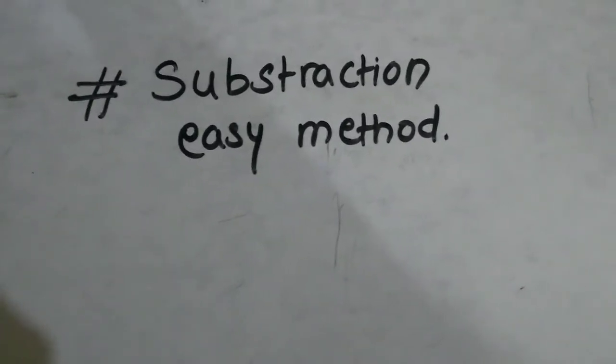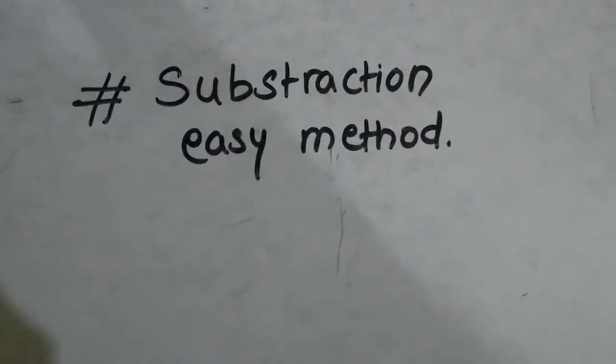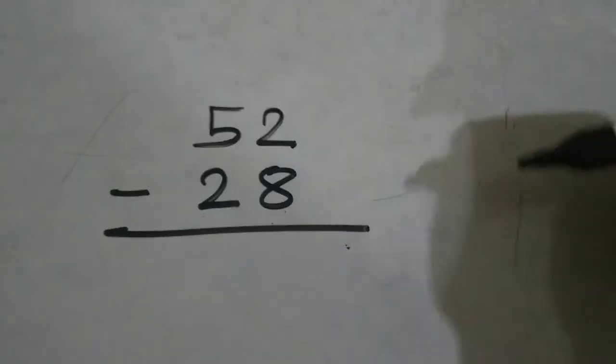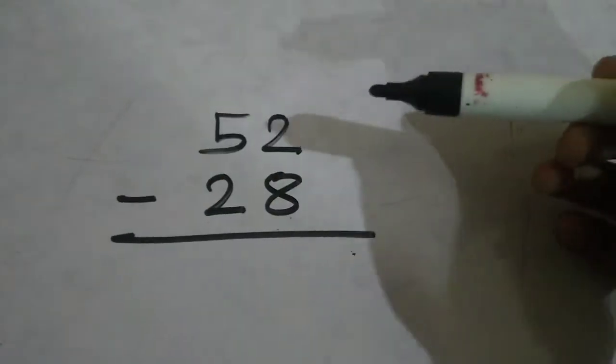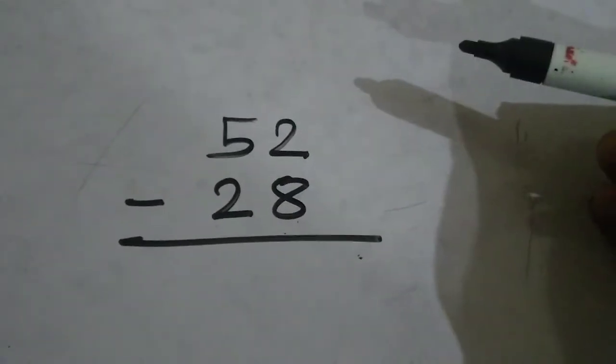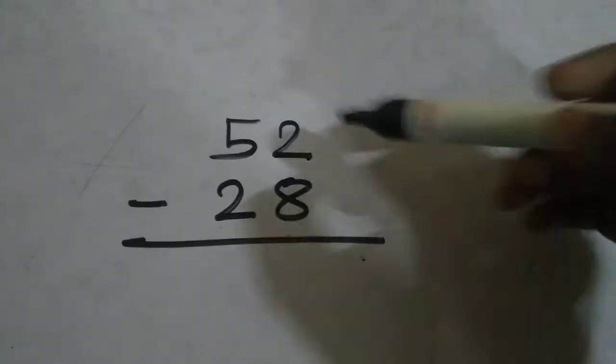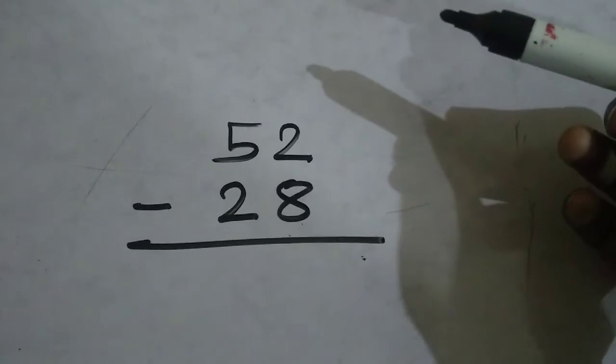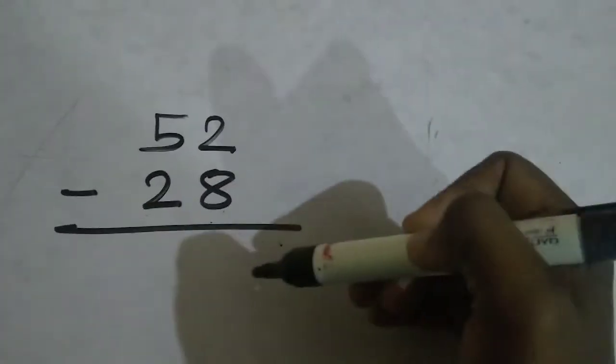Okay, let's get started guys. Let's solve this example: 52 minus 28. If you follow the basic rule of subtraction, then you end up being confused because here in this example you have to deal with carry and all the stuff. So just follow whatever I'm saying to you.